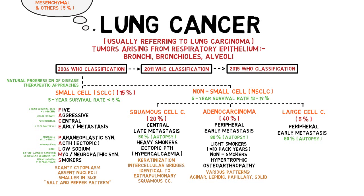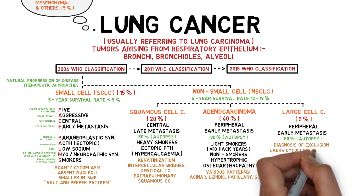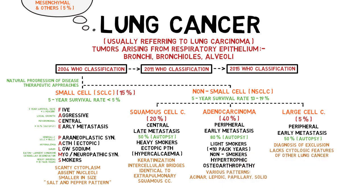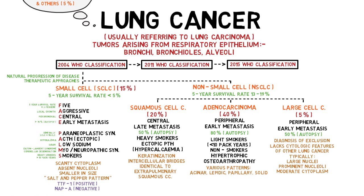Large cell carcinoma is a diagnosis of exclusion — it lacks the cytological features of other cell types. Compared to small cell, it has large and prominent nucleoli with moderate cytoplasm. Immunological markers help differentiate them: thyroid transcription factor-1 (TTF-1) is positive in small cell, while NAPSIN-A is negative in small cell. Both are negative in squamous cell carcinoma, whereas both are positive in adenocarcinoma.